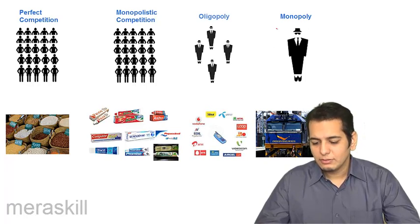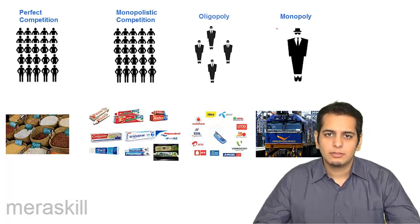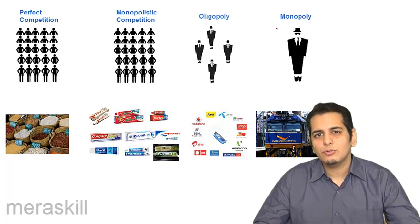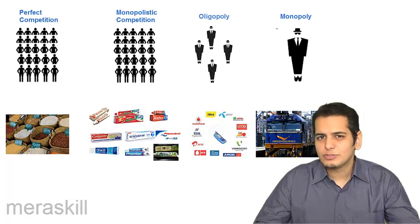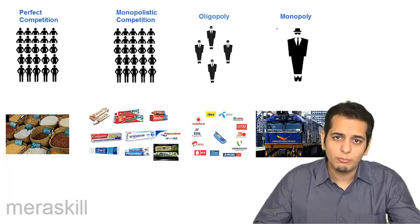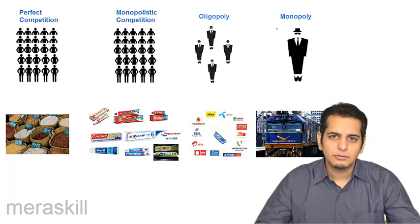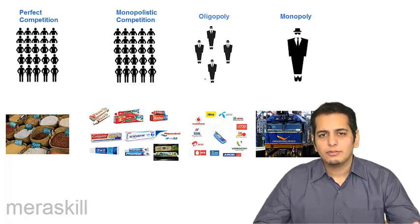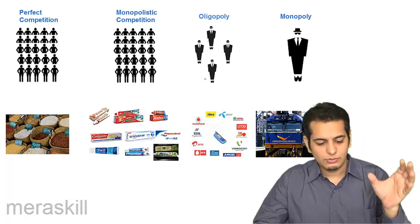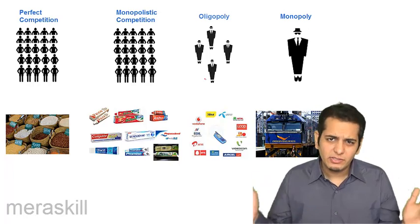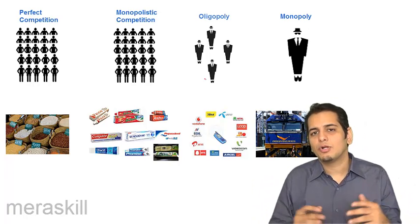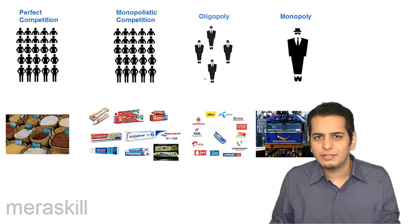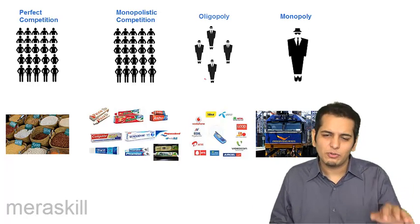The final type is oligopoly. 'Olig' means few and 'poly' means sellers, so in an oligopolistic market you have few sellers. However, there is no restriction on the number of buyers. In perfect competition and monopolistic competition there were many sellers, but in oligopoly the number of sellers has decreased — generally it ranges between 2 to 10 or 12 sellers.